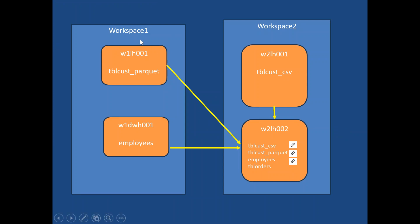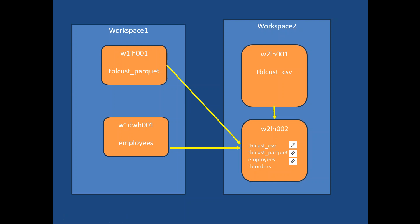Here's what we are going to do. First, I'll create Workspace One. In Workspace One, I'll create Lake House 001 — meaning W1 is Workspace One and LH001 is the first lake house within that workspace. Within this lake house, I'll create a table called tbl_cust from a parquet file. I'll also create W1_DWH001 — the first data warehouse in Workspace One — and inside it create a table called employees.